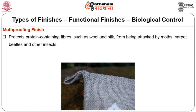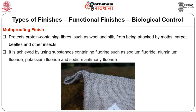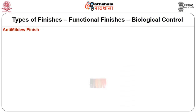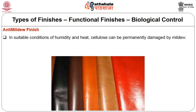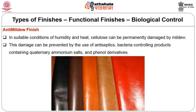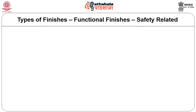Moth proofing finish protects protein-containing fibers such as wool and silk from being attacked by moths, carpet beetles and other insects. It is achieved using substances containing fluorine such as sodium fluoride, aluminum fluoride, potassium fluoride and sodium antimony fluoride. Anti-mildew: in suitable conditions of humidity and heat, cellulose can be permanently damaged by mildew. This damage can be prevented by the use of antiseptics and bacteria-controlling products containing quaternary ammonium salts and phenol derivatives.